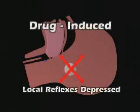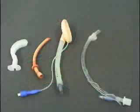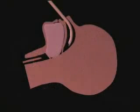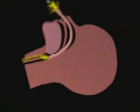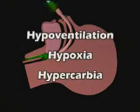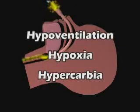Unlike OSA, the obstruction is drug-induced and the local reflexes are also depressed. There tends to be no spontaneous relief of obstruction, and usually outside intervention is required to restore the patency of the airway. However, if upper airway patency is restored, then the patient will spontaneously breathe down to very deep levels of general anesthesia. Hypoventilation, hypoxia, and hypercarbia may ensue.